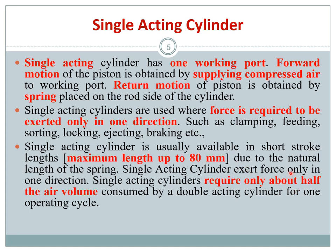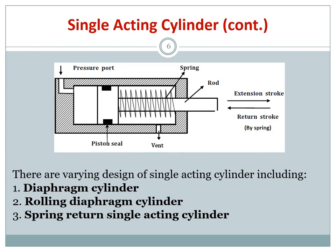Single acting cylinders exert force only in one direction and require only about half of the air volume consumed by a double acting cylinder for one operating cycle. This is because a double acting cylinder has two ports — one to extend and one to retract — so it requires twice the air volume.